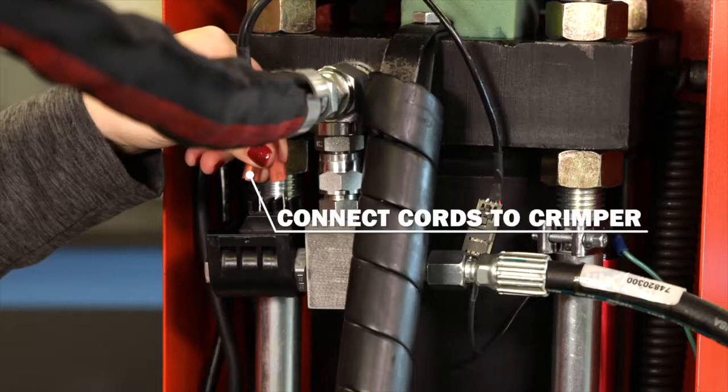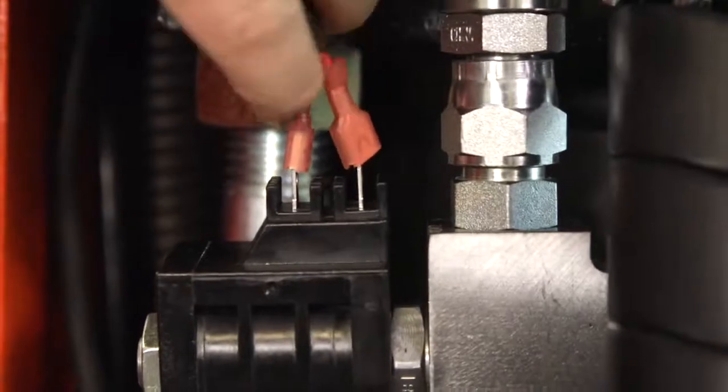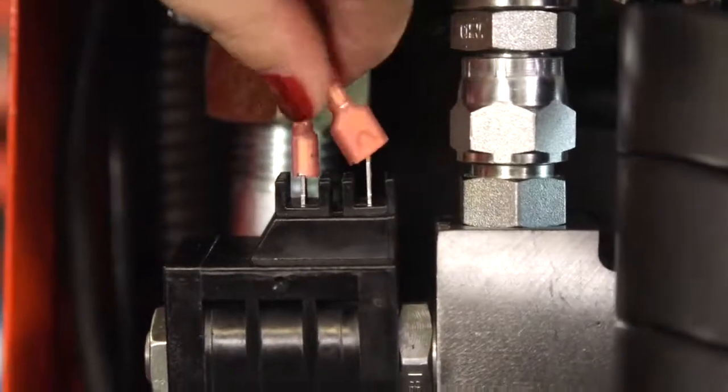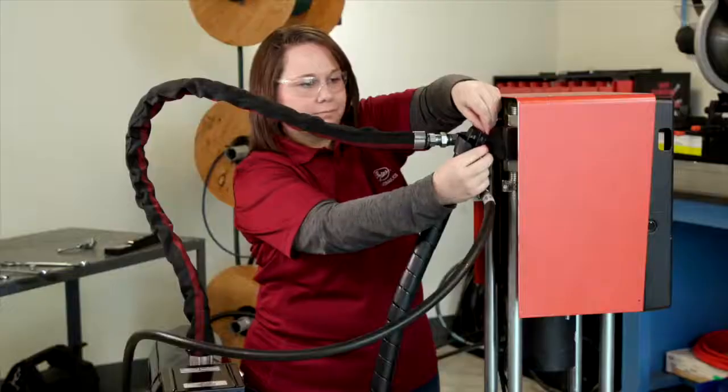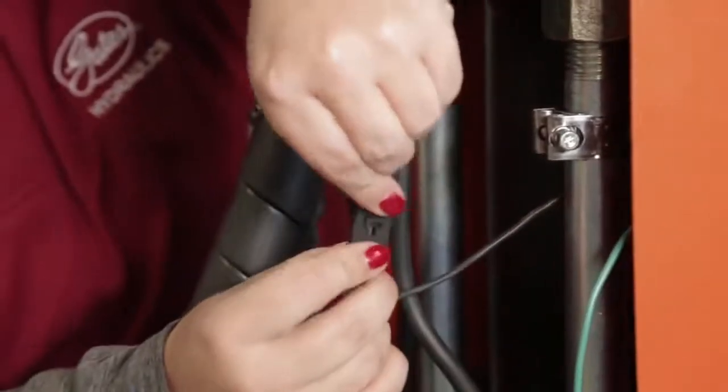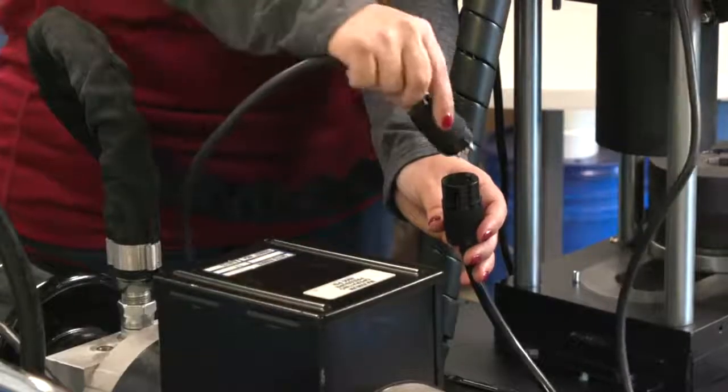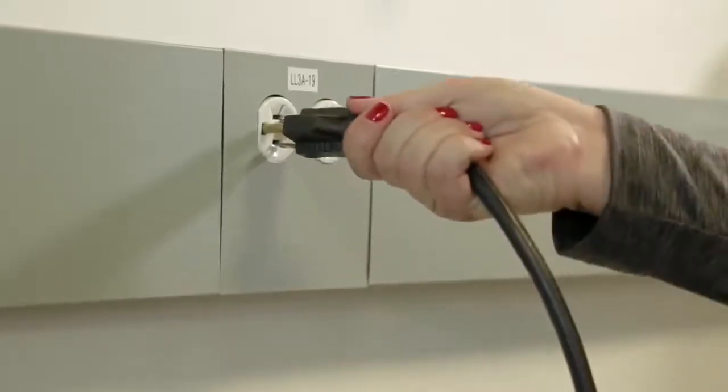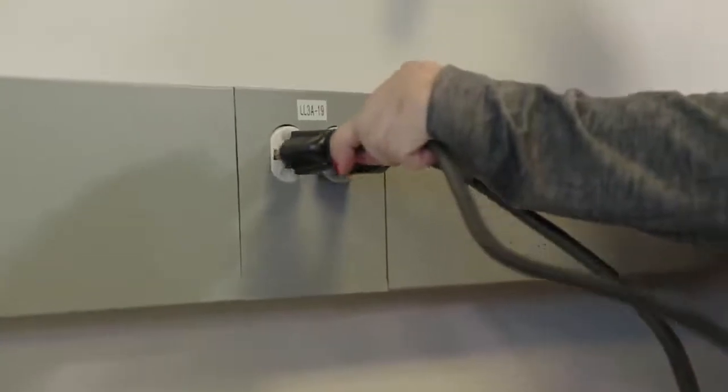The last step of the mechanical installation is to connect the four cords at the back of the crimper. Connect the solenoid cord to the solenoid at the rear of the crimper. The orientation doesn't matter. Next, connect the cable on the sensor to the matching connector. Connect the pump power cable and the pump power cord in an outlet and turn the pump switch to on. Lastly, connect the final cord into a power outlet. The power light on the faceplate should illuminate.